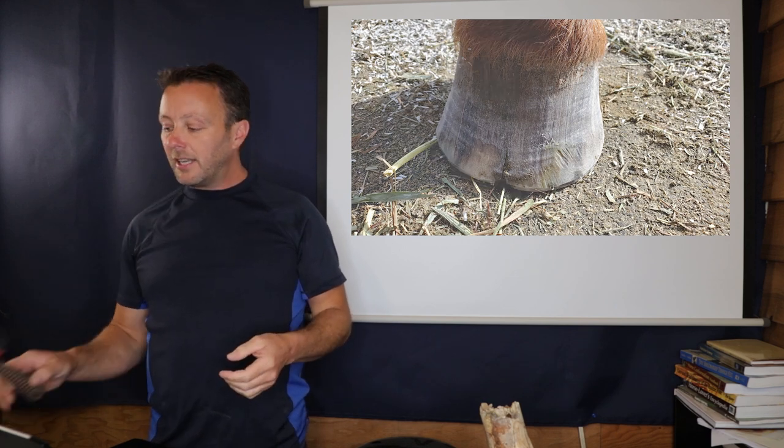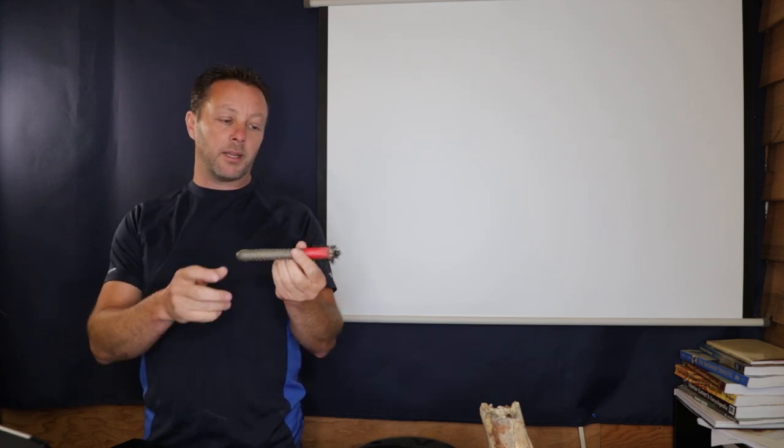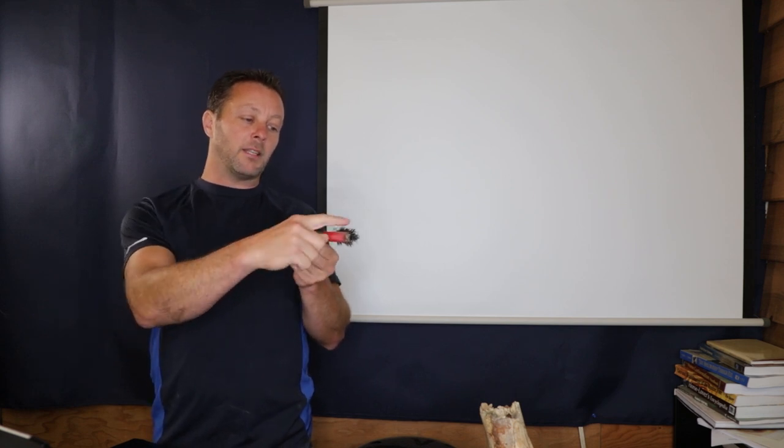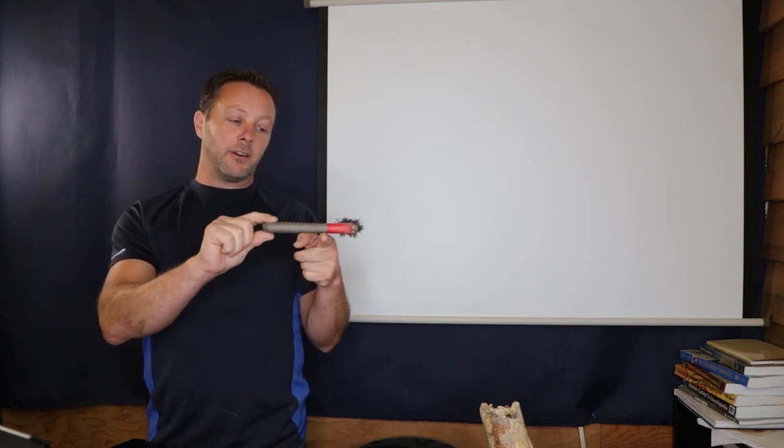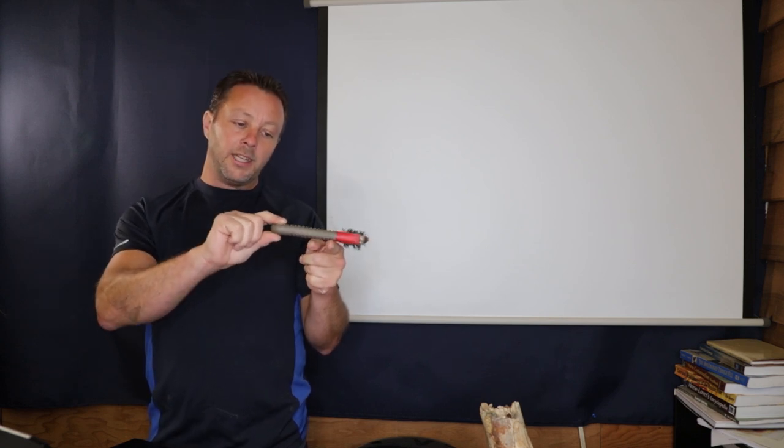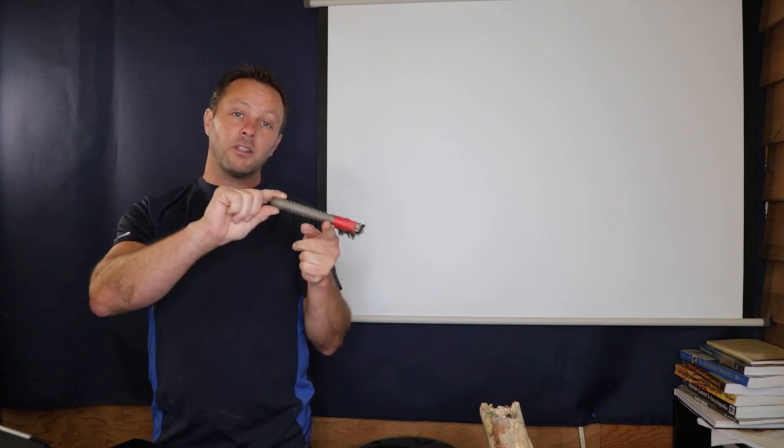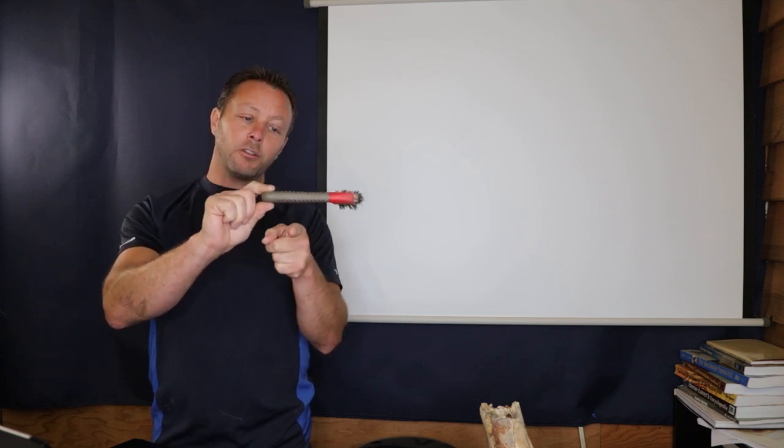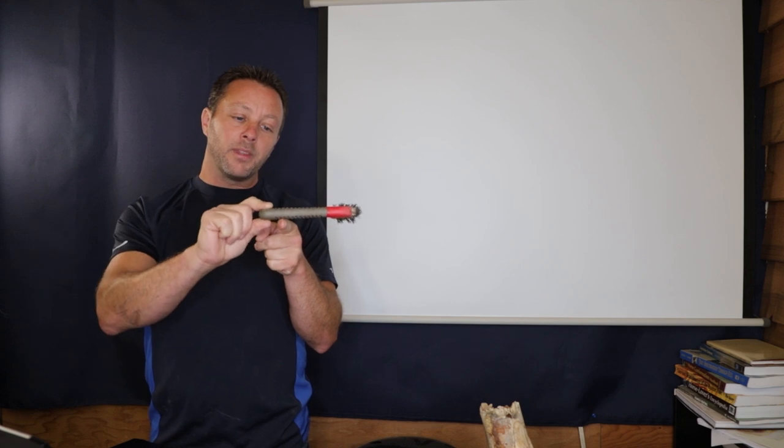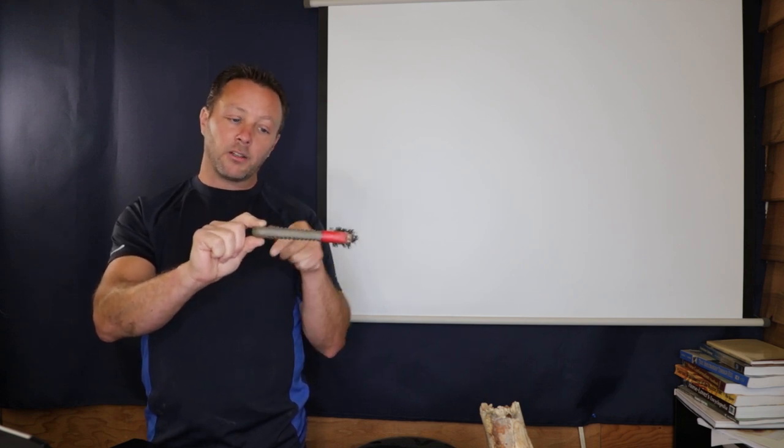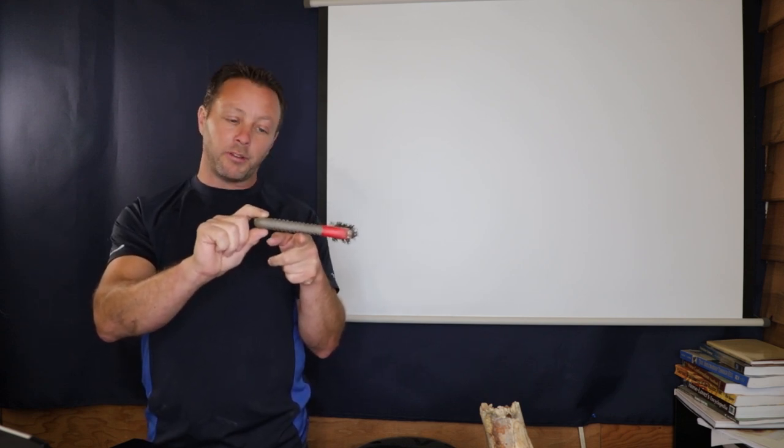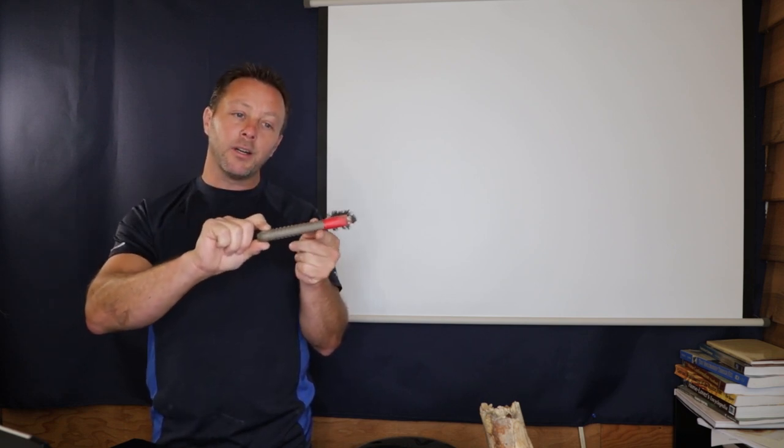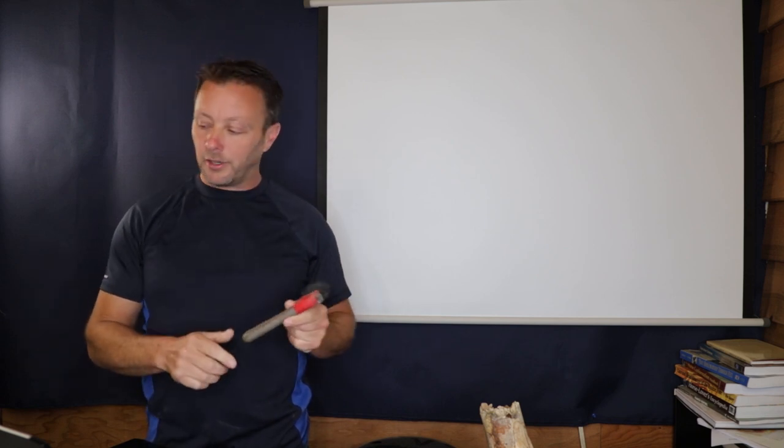If you're wondering what mechanical leverage is, if we were to take, so this is just a hoof pick, but if you imagine that something is here and something is here and I have my finger here, by pushing down here I have more mechanical leverage than I would have if the fulcrum, the point that we lever from, is here. This would have more mechanical leverage. Somewhere over here would give me a lot of mechanical leverage, so a lot of power in relation to the other end.